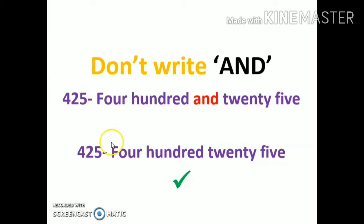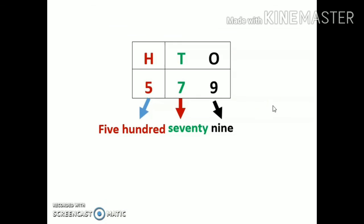Then the number name would be 425. Please avoid using and in between. It's an incorrect way of writing number names. Whenever we have to write any number name, make sure that you write ones, tens, and hundreds on the top. It will make your work easier.